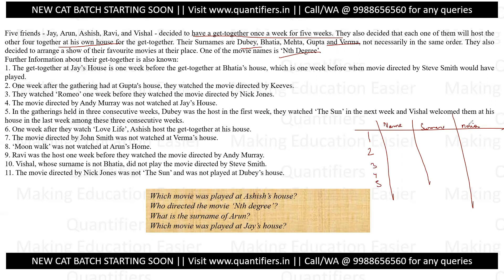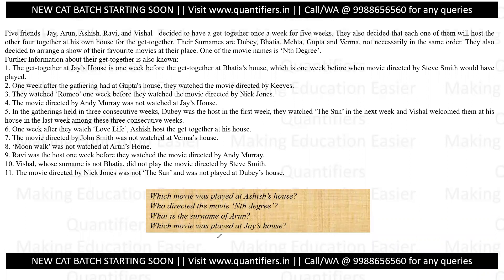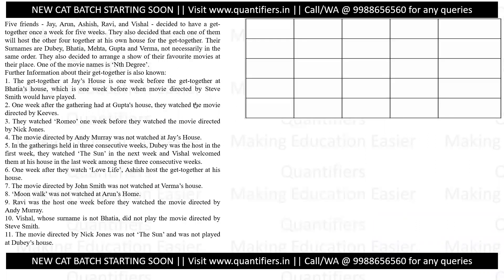At the end of the day, there are 20 variables that you have to arrange — names, surnames, movies, and directors — for five particular weeks, that is five into four equals 20 variables to arrange throughout. This set looks a bit scary when you read that there are 11 clue points. The best way to approach such a set is by writing them out and learning how to proceed.